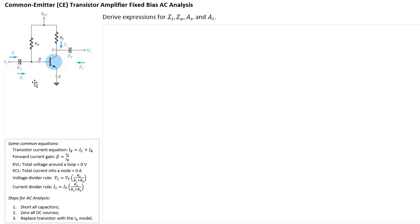So that means we're assuming the capacitors are zero ohms — meaning C1 becomes a short and C2 also becomes a short. The next thing we do is zero all DC sources. In this circuit, there's only one DC source, which is VCC, and that needs to become zero volts.